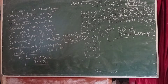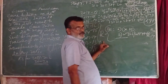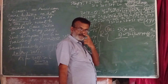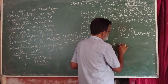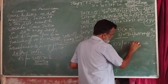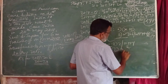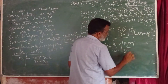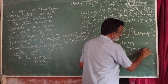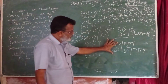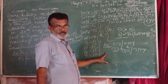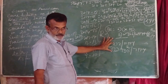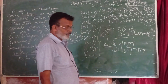If an individual becomes a resident, next we see whether he is an ordinarily resident or not ordinarily resident. To determine this, we apply the additional conditions. Condition 1: he must be a resident for 2 years out of 10 preceding previous years. Condition 2: he must have been in India for a minimum period of 730 days in 7 preceding previous years. If both conditions are satisfied in addition to the basic condition, he is called ordinarily resident. If one or none are satisfied, he is not ordinarily resident.